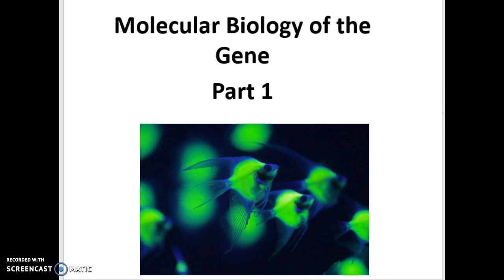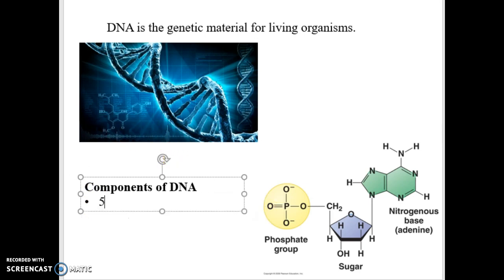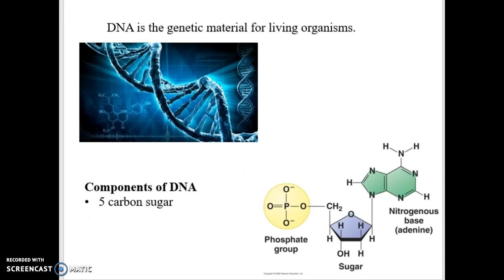We're going to start out with the basics. When we're looking at molecular biology of the gene, we start with DNA. It's the basic genetic material for all living organisms. Now, DNA is composed of three components. Component one is a five-carbon sugar. All DNA structures have this basic five-carbon sugar associated with it. That five-carbon sugar is kind of the center point or the backbone of the DNA structure.